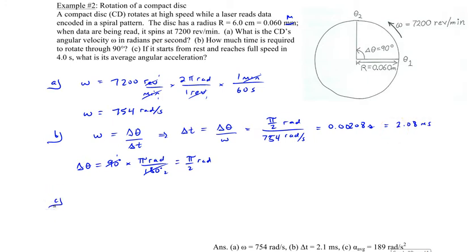For part C, we assume it starts at rest and reaches full angular speed of 7200 revolutions per minute, or 754 radians per second, in 4 seconds. We're asked to find the average angular acceleration.